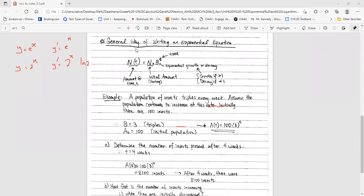So here's the general way of writing exponential equations. N is amount after time t equals N₀ initial amount. b is the base, is exponential growth or decay, and t is time.